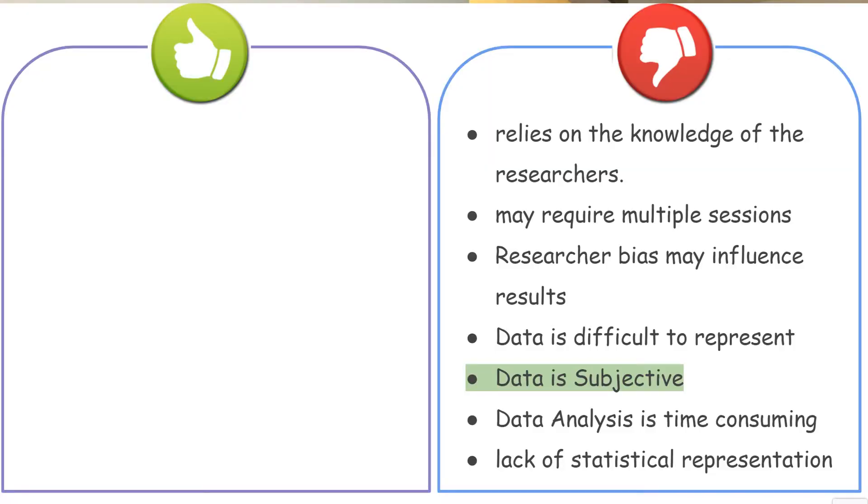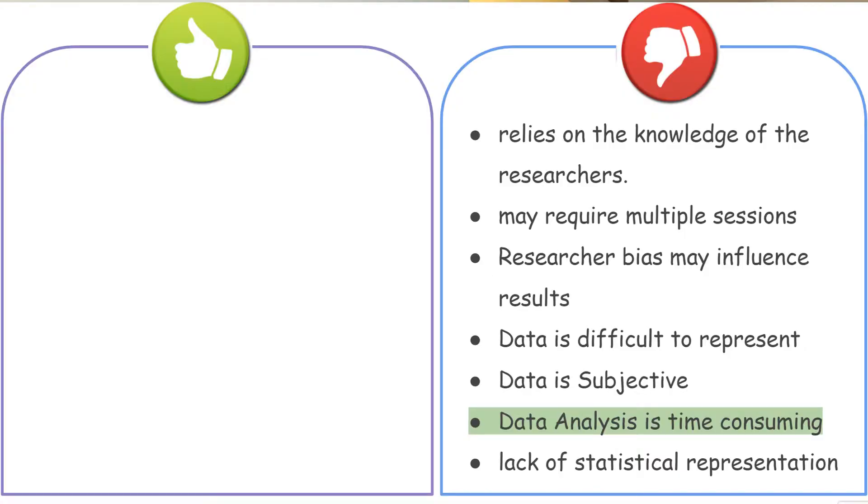Qualitative research is subjective, and the data interpretation can be time-consuming — unlike quantitative data where you use mathematical and statistical tools to analyze information. Because the data is subjective, it has to be interpreted by different people, who may have different opinions and different interpretations, which can lead to divided opinions when results are derived.